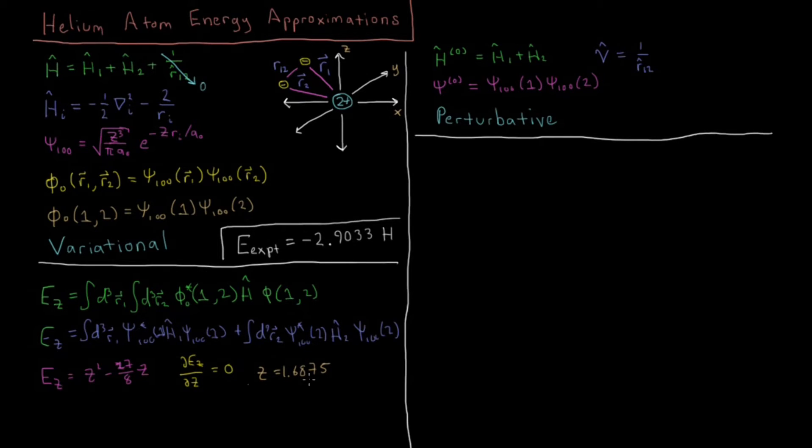Okay then substituting back in this z into here, what we would have is that our minimum energy, with this value of z here, would be minus, this value is 27 over 16, minus 27 over 16 squared, which equals minus 2.848 Hartree.